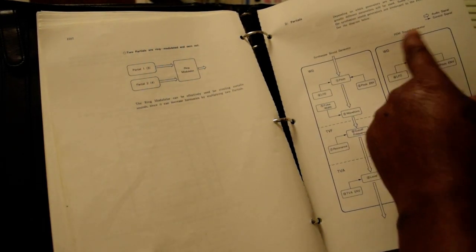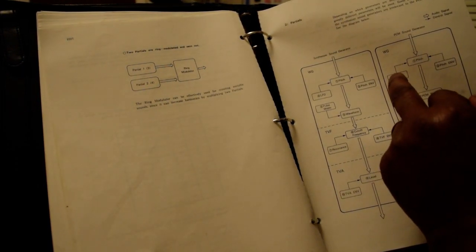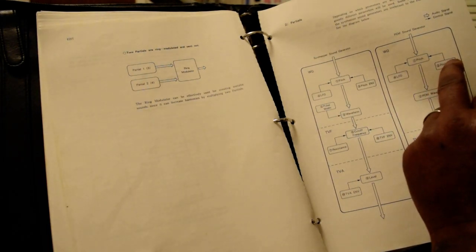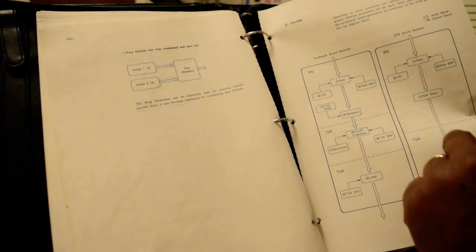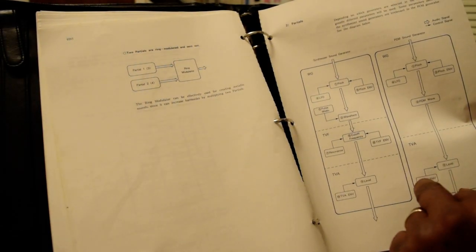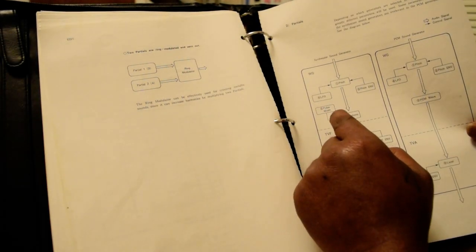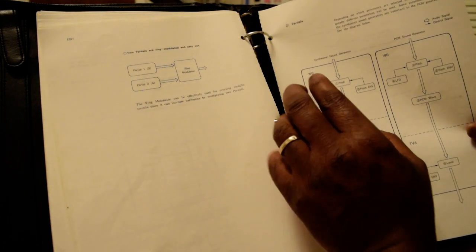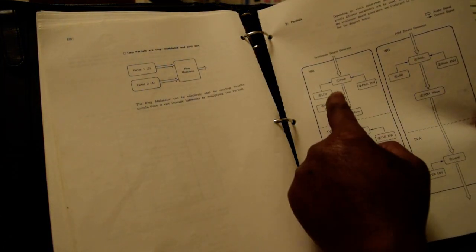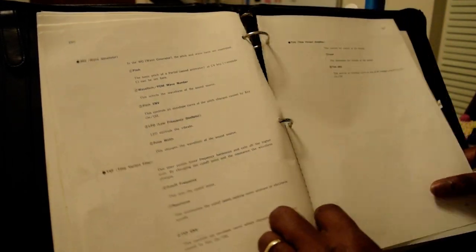Over here is a PCM sound generator. It goes from pitch, LFO, pitch envelope, PCM wave, and then it goes from WG to TVA, level, TVA envelope. This is how you get some of those kind of real interesting sounds by doing all this right here. That really changes the sound. That's what makes the synthesizer very interesting.